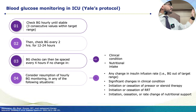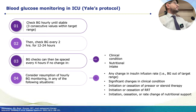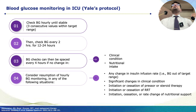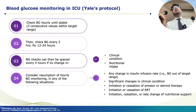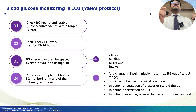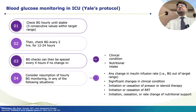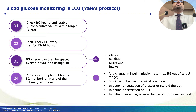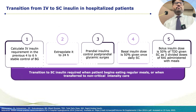The Yale protocol suggests checking blood glucose hourly initially until three consecutive stable readings are achieved, then reducing frequency to two-hourly, four-hourly, and six-hourly. In our practice, because we use simultaneous subcutaneous coverage, we generally check two-hourly — recognizing the nursing burden. The guideline clearly states the initial protocol is one-hourly monitoring.